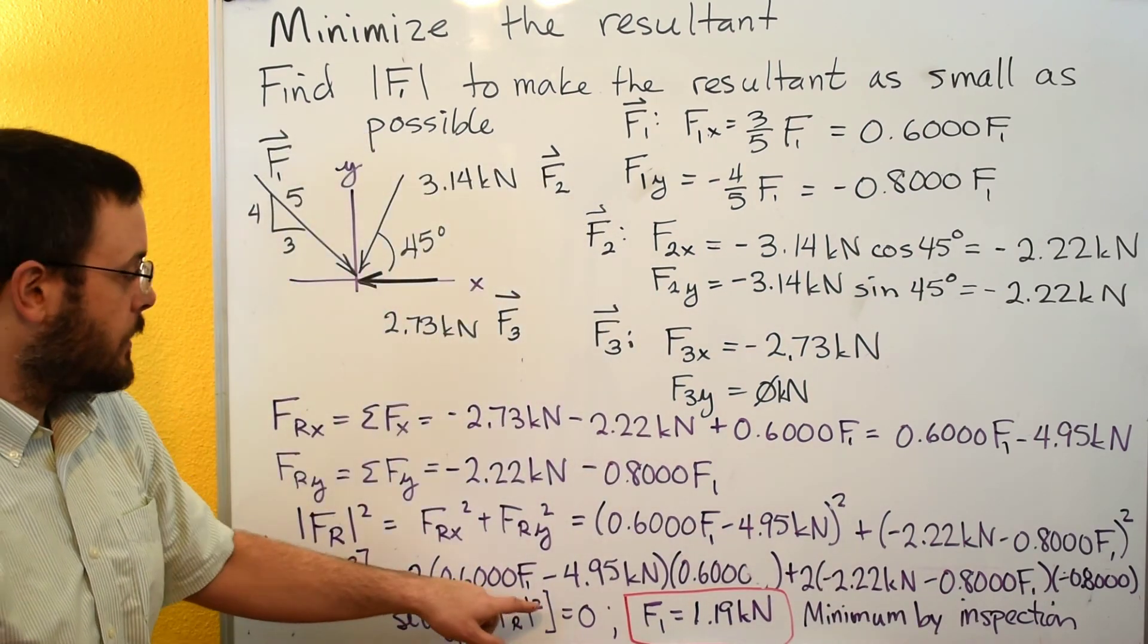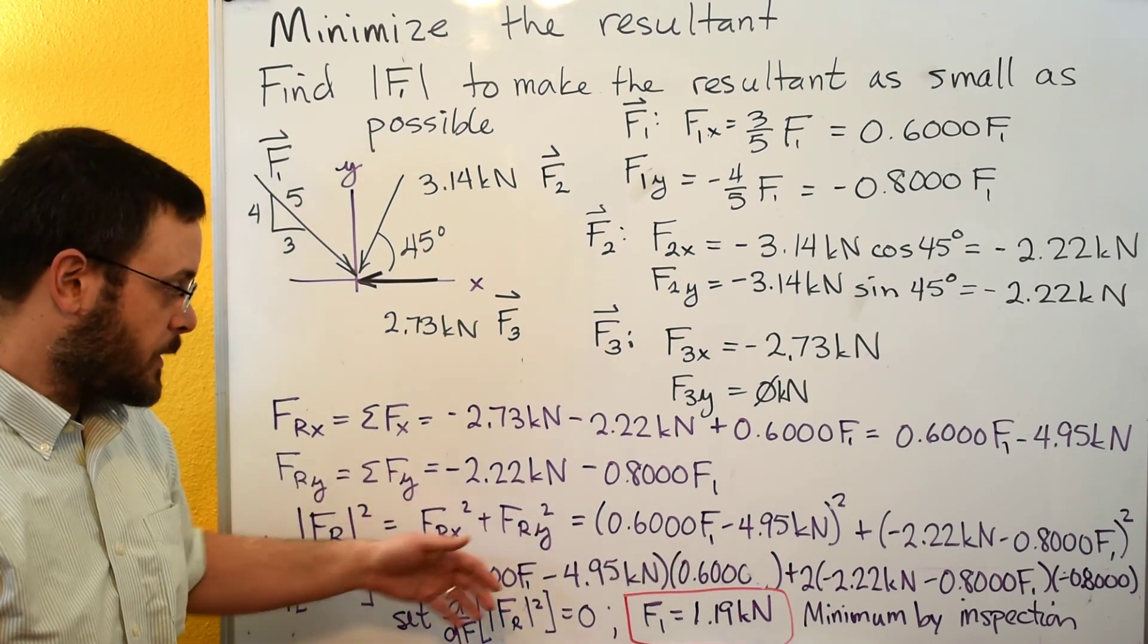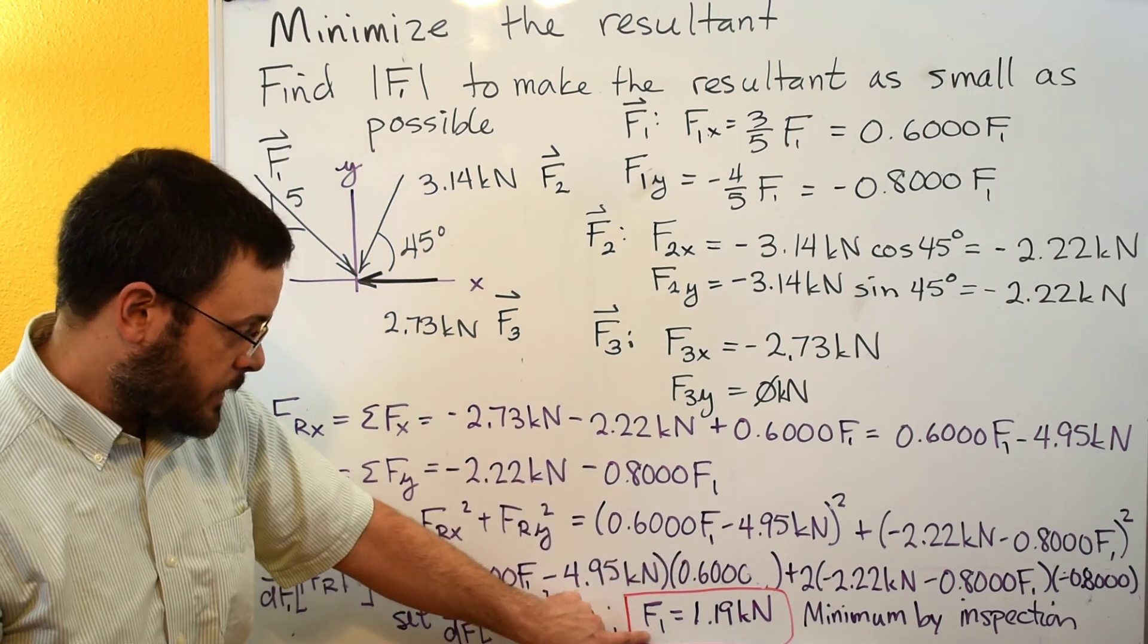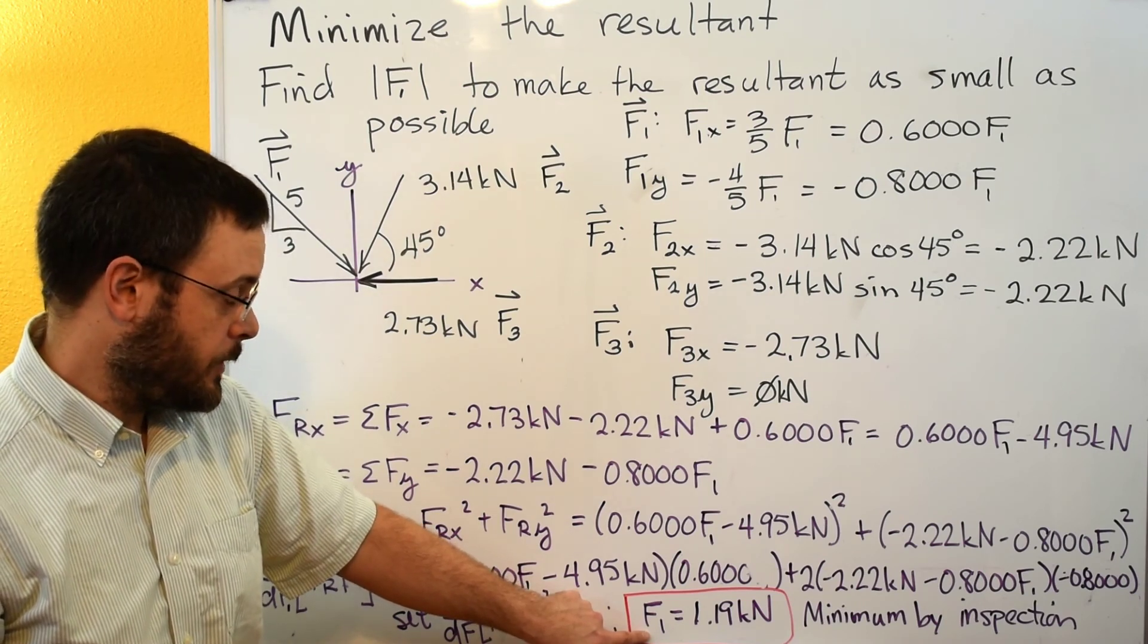We would set this equal to 0. You can see this is just linear now in F1, so it's easy to solve. I just ran out of board space. So when you solve it, you get F1 is equal to 1.19 kilonewtons.